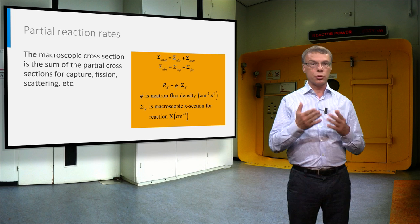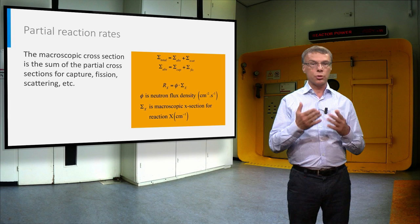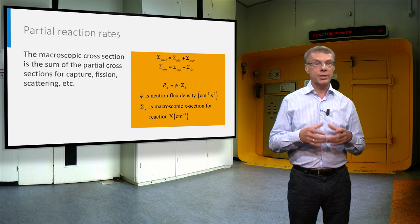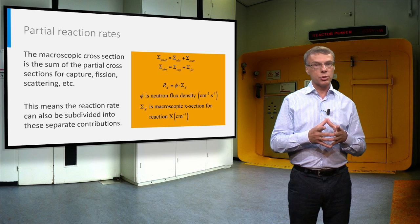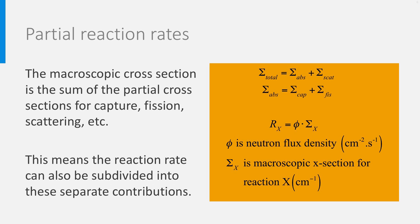Because the macroscopic cross section can be split into the individual contributions due to neutron capture, fission and scattering, the reaction rate can be subdivided in these separate contributions. The units of these partial contributions are the same as for the total reaction rate, and the sum of all partial reaction rates is equal to the total reaction rate.